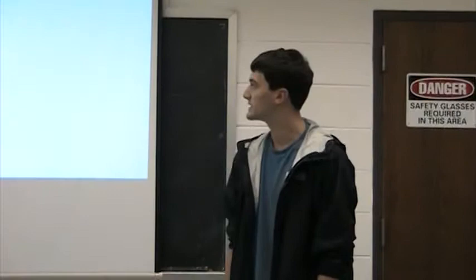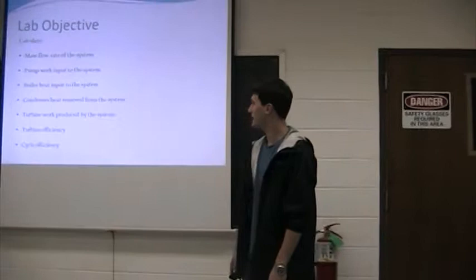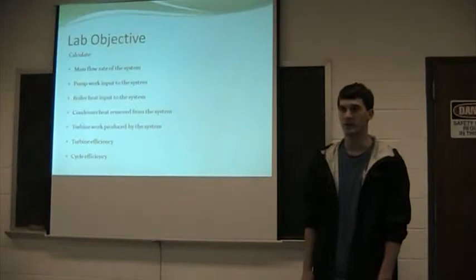Here are our lab objectives. The first one is to calculate the mass flow rate of the system, then the pump work input to the system, the boiler heat input to the system, the condenser heat removed from the system, the turbine work produced by the system, the turbine efficiency, and we calculate the ideal and actual cycle efficiency.